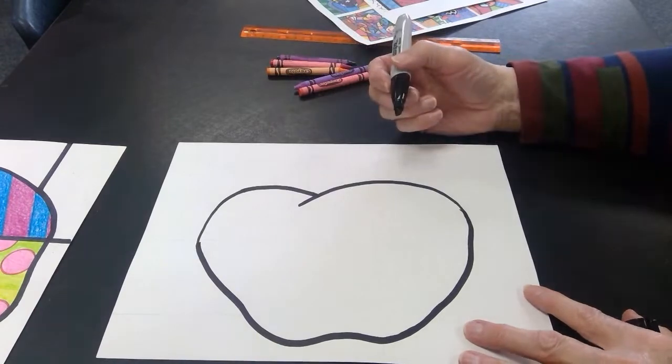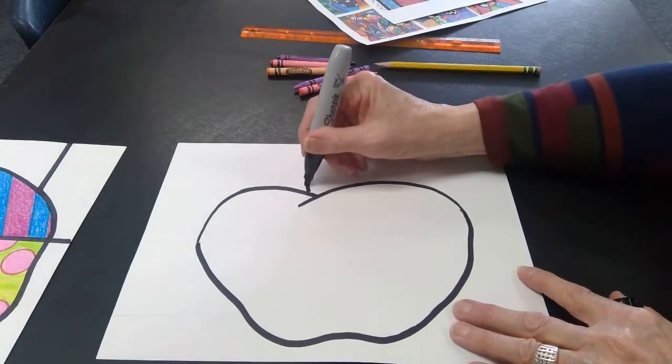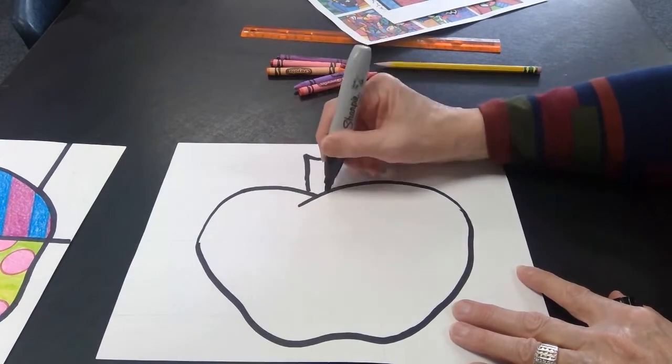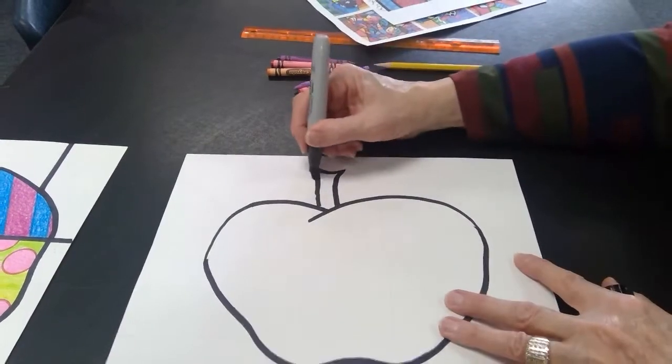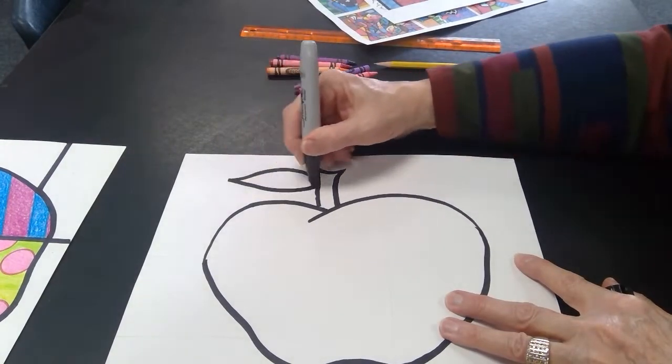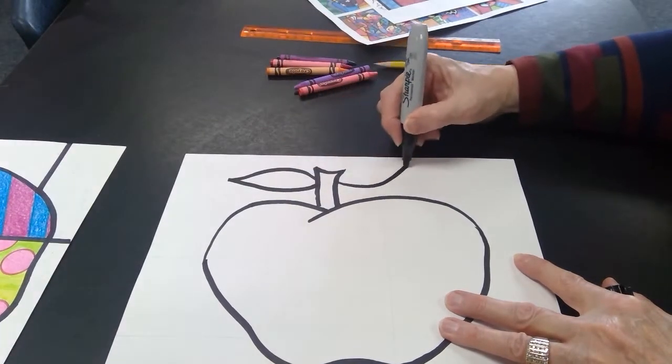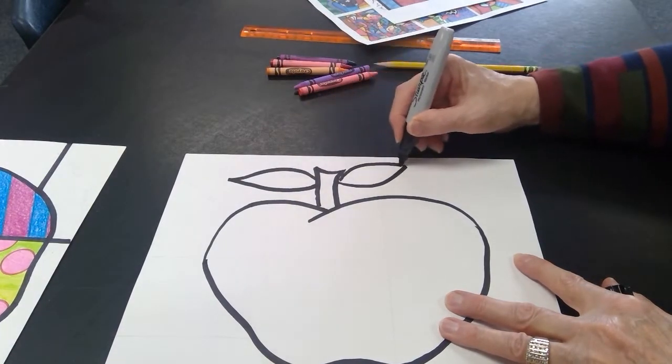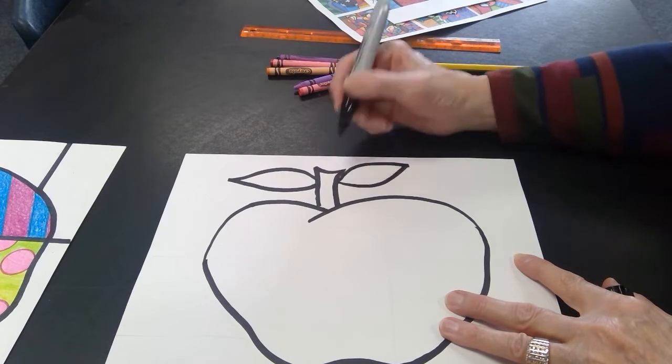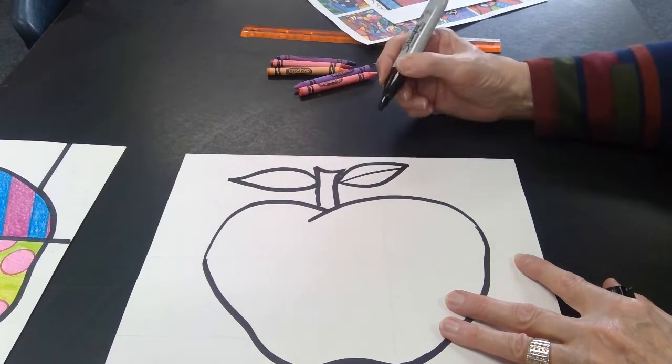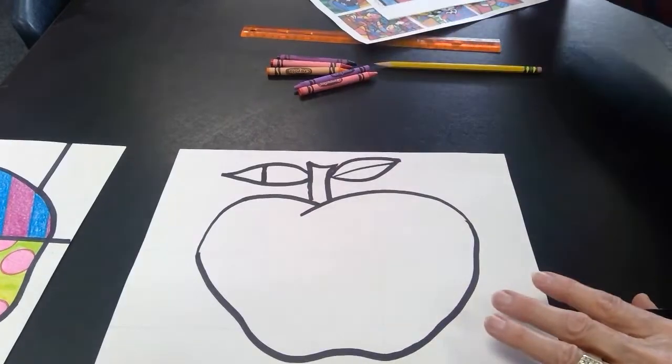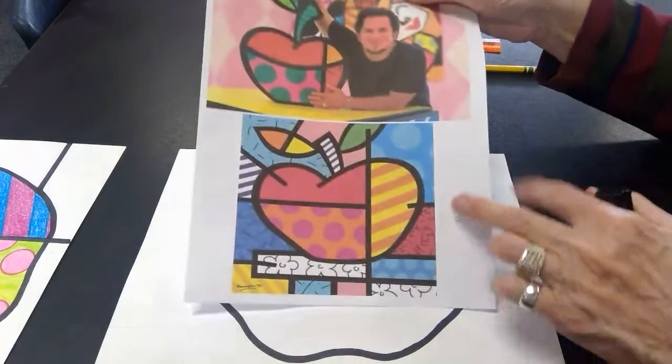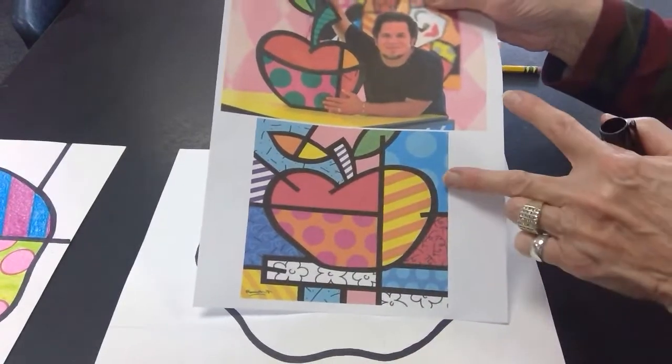So here's our apple, and then I'm going to draw the stem at the top. That's a little bit of a rectangle shape. Got one leaf over here and another leaf on this side. Notice how those leaves are pointed, and I'm going to draw a line there and maybe one there.